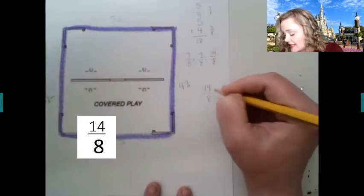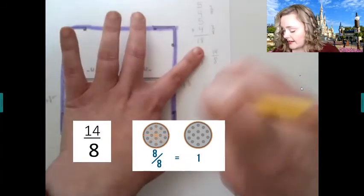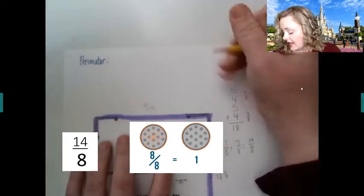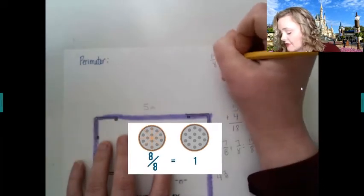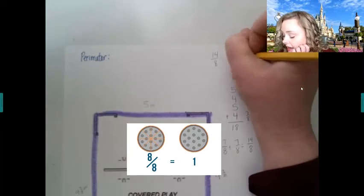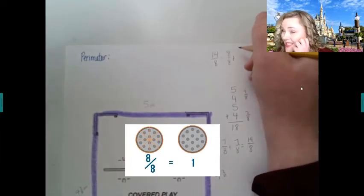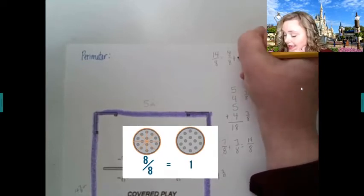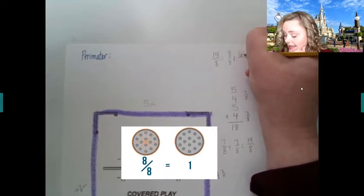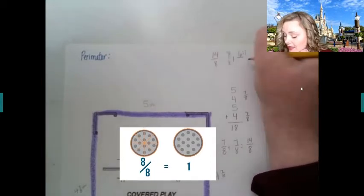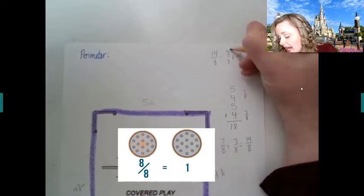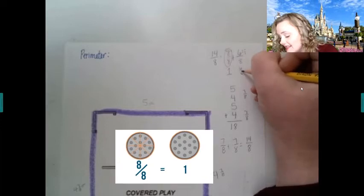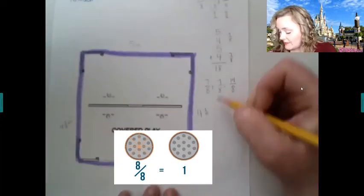And I'm going to think about that. I don't have quite enough room right here, so I think I'll move it up like this. So if I have 14 eighths, that would be the same as eight over eight, and then eight plus eight is 16, so eight plus six - eight, nine, ten, eleven, twelve, thirteen, fourteen - is fourteen eighths. So eight over eight is equal to one whole, and then six eighths.